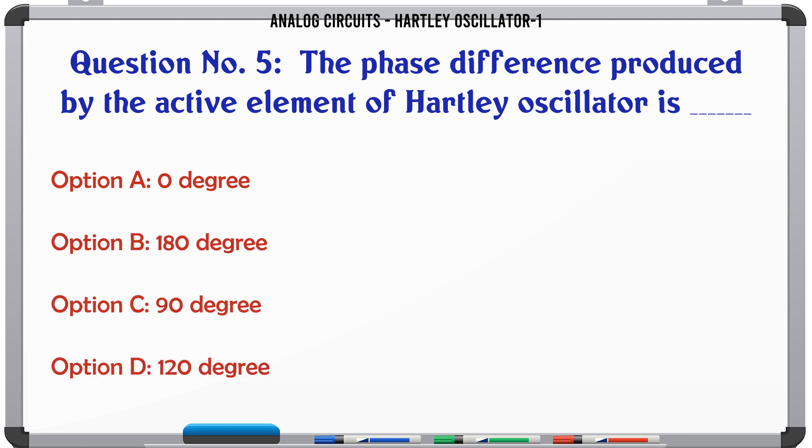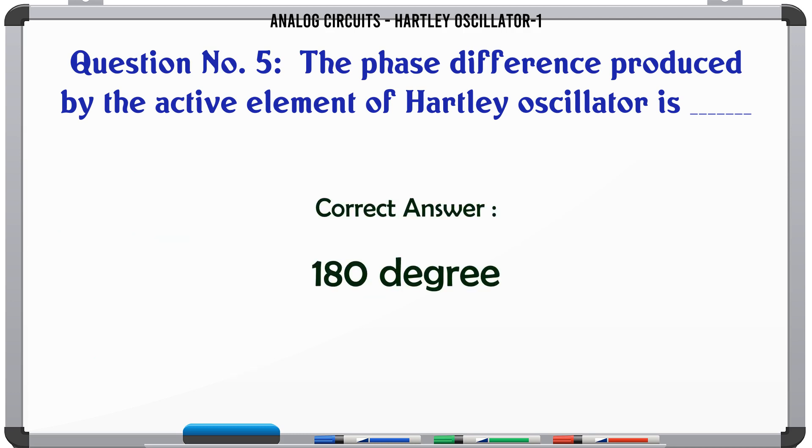A: 0 degree, B: 180 degree, C: 90 degree, D: 120 degree. The correct answer is 180 degree. The gain device in